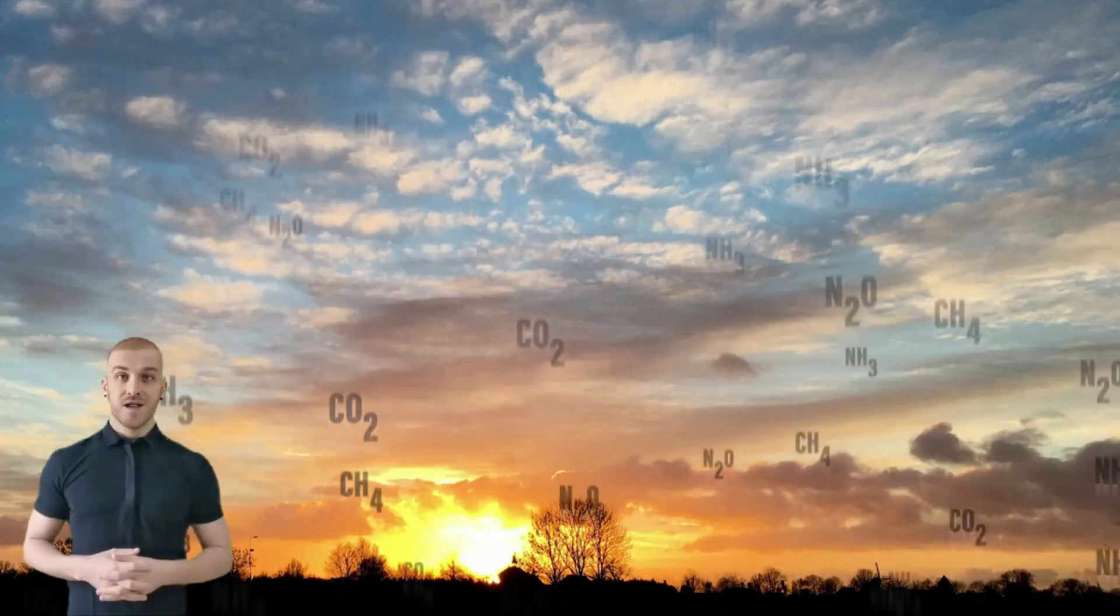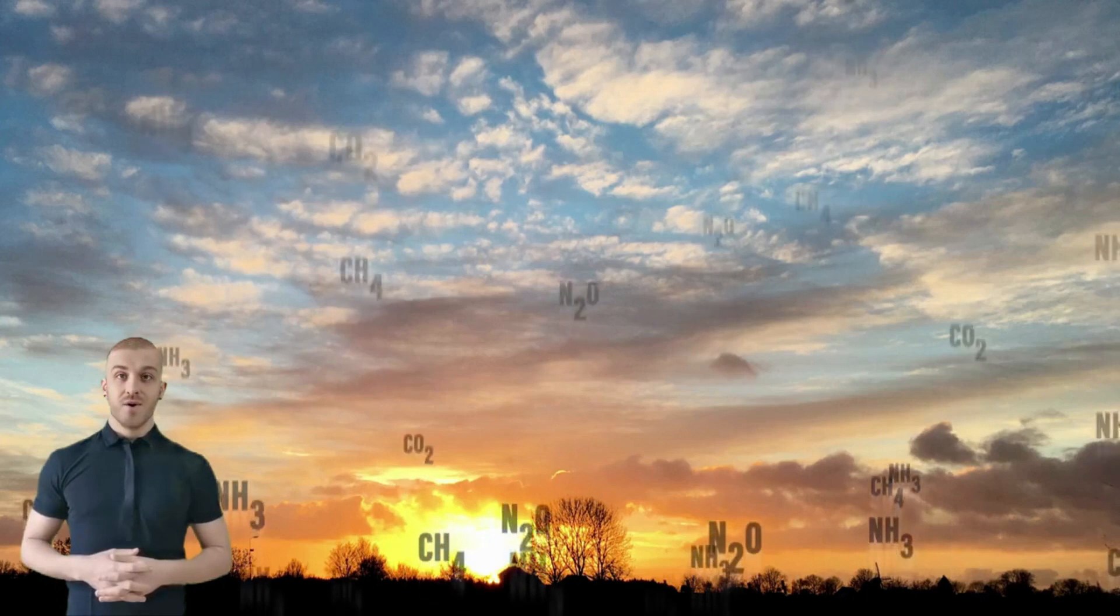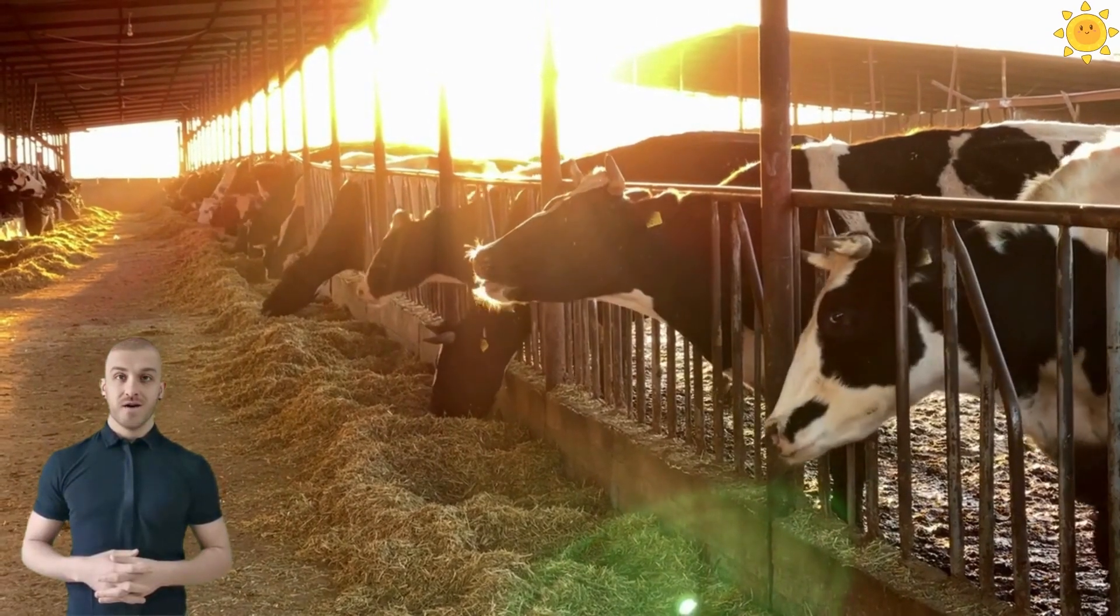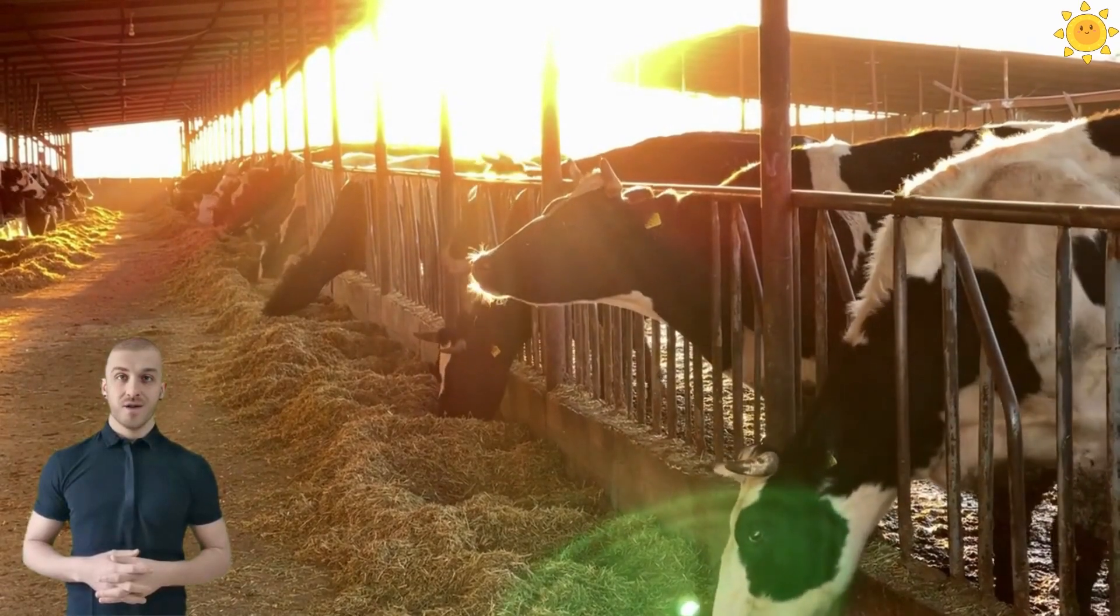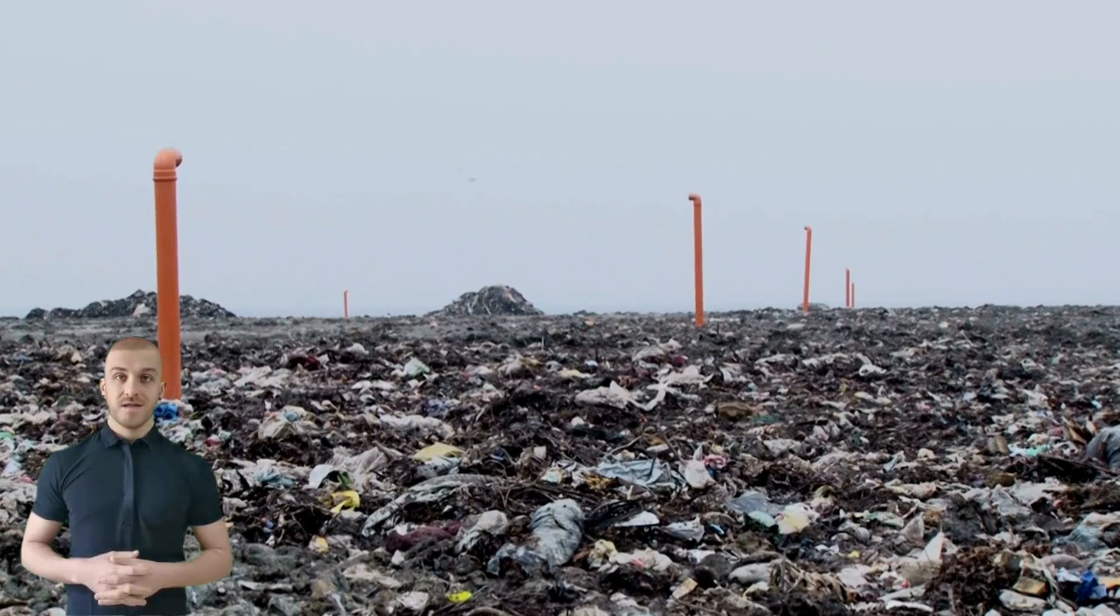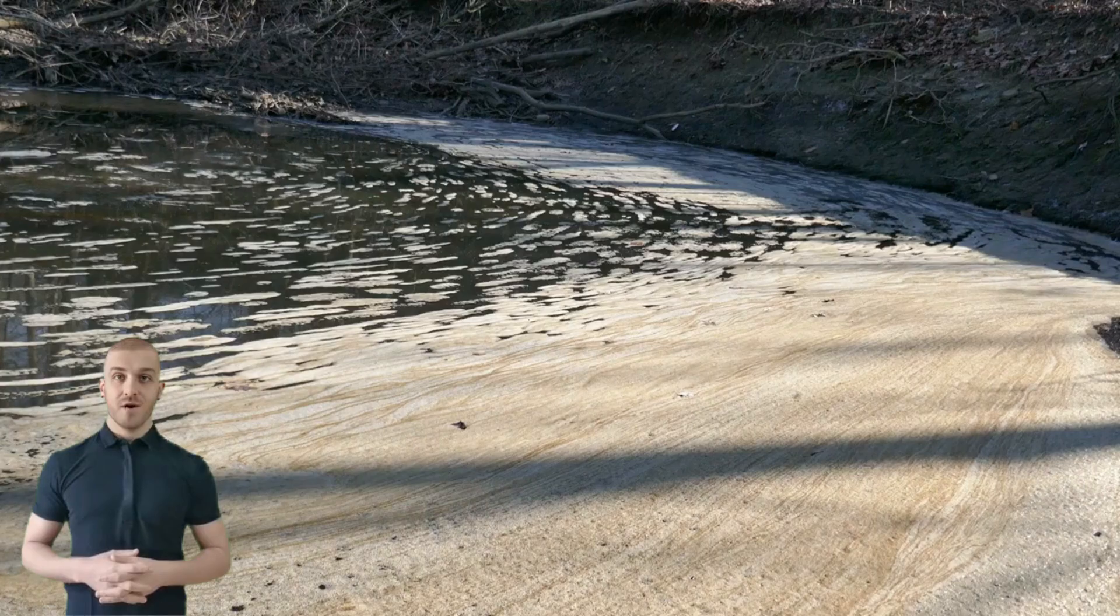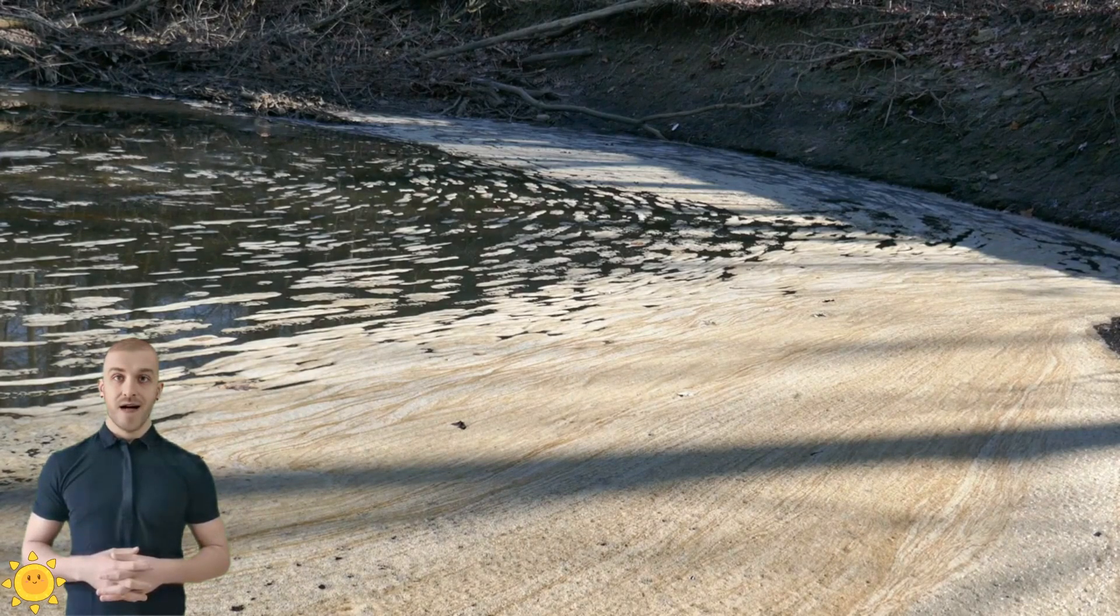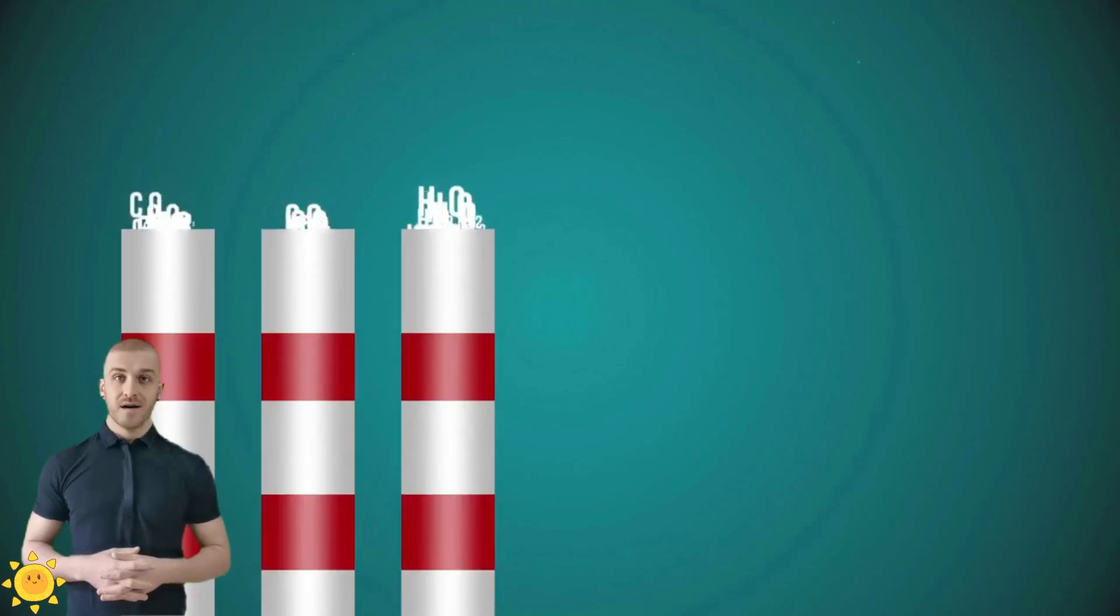Methane is a gas that is produced by bacteria. When you burp, you are releasing methane. Methane is also produced when cattle, sheep, and other livestock eat grass. It is also produced when landfills and sewage systems leak. This methane then mixes with the air and is released into the atmosphere. Methane is more powerful than carbon dioxide at trapping heat. It is estimated that there is more methane in the atmosphere than there is carbon dioxide.